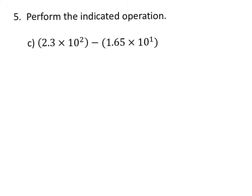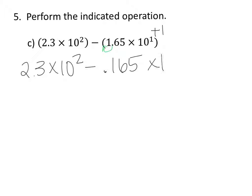To subtract numbers in scientific notation, the exponents must be the same. As you can see here, they are not the same. The first exponent is a 2, the second exponent is a 1. So why don't we increase the exponent in the second number by adding 1? And if we do that, that means we need to move the decimal point to the left one. So the first one will stay the same, 2.3 times 10 to the 2nd, minus 0.165 times 10 to the 2nd.